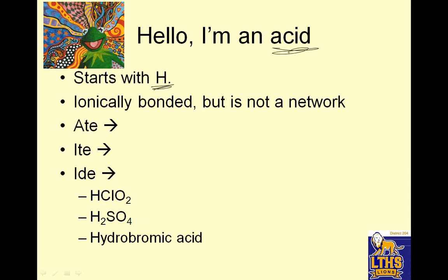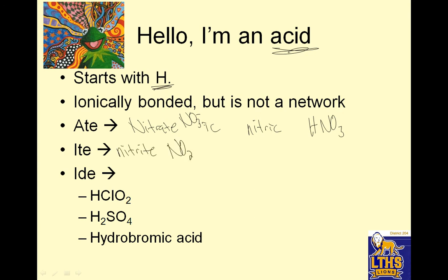Acids always start with an H for us. Acids are ionically bonded, but it is not a network. If you have an '-ate' ion, '-ate' becomes '-ic' — you can remember 'ic, I ate it.' So nitrate becomes nitric acid. Nitrate is NO₃ negative 1, so nitric acid would be HNO₃. For '-ite', like nitrite — nitrite is NO₂ negative — '-ite' becomes '-ous'. I remember it like '-itis': Matt has gingivitis, his gums are swollen. So nitrite becomes nitrous acid, and since it's still negative 1, it would be HNO₂.